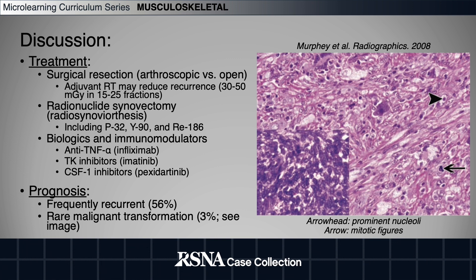Promising molecular targets for immunomodulatory therapy include TNF-alpha, TK, and CSF-1, though these agents as yet remain under investigation.